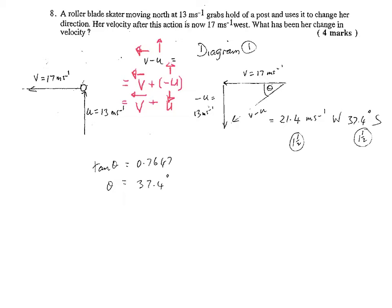OK, this question has the rollerblade skater initially moving at 13m per second North, so that's its initial velocity. The final velocity is 17m per second West. So when we do V take U, remember that's the same as